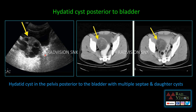Next, this is also hydatidosis. You can see there is a large hydatid cyst with multiple daughter cysts posterior to the bladder on the right side. On CT with IV contrast, you can see this cystic lesion with multiple daughter cysts posterior to the bladder.